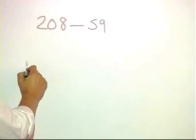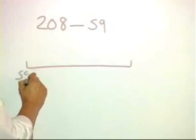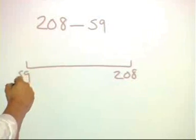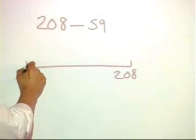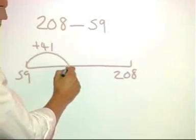I can plot those two differences. 59 here, 208 there. Using my knowledge of bonds to 100, I know it's a step of 41 to take me to 100.